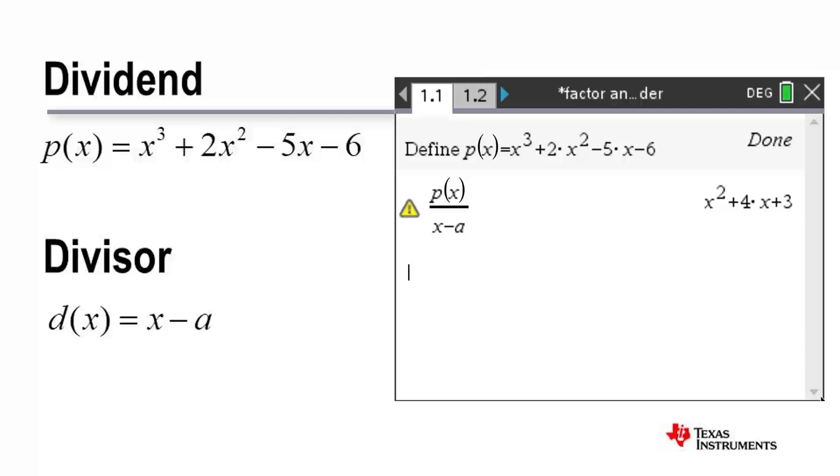Just like our numerical result where we found that 7 was a factor of 42, which therefore meant that 6 was also a factor, our polynomial example tells us that the quadratic equation, or the quotient, is also a factor of our polynomial.